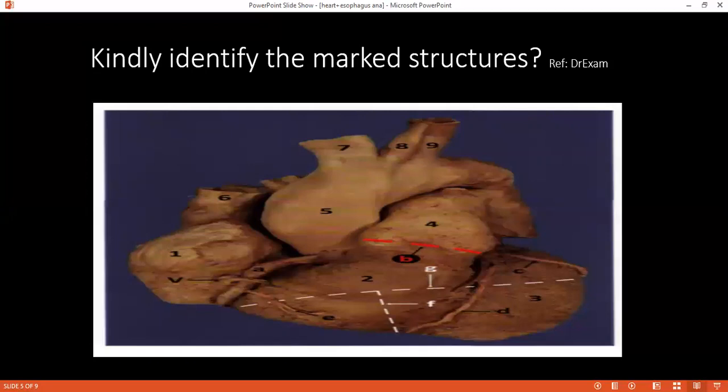It will pass skin, superficial fascia, then the diaphragm — keep telling me — then the pericardium. After the pericardium it enters into the pericardial space. So what are the structures at risk of damage during pericardiocentesis? It can cause injury to the diaphragm, the left lung, and the left lobe of the liver.